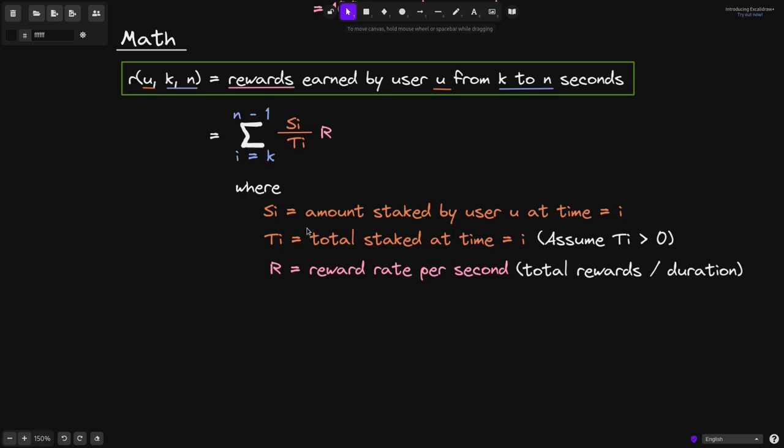With these variables defined, we can now write the equation for the function r that calculates the amount of rewards earned by the user. This will be equal to the sum from i equals k to n minus 1, s sub i divided by T of i multiply the reward rate R.